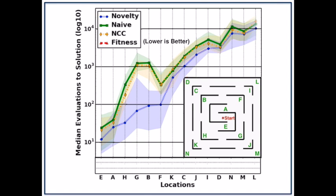Let's add naive in green and NCC in yellow. For these plots, lower is better, so novelty search is taking less time to find different goal locations.